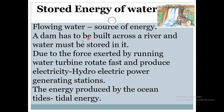Next is the stored energy of water. Flowing water can act as a source of energy. A dam is built across a river and water is stored in it. Due to the force exerted by running water, the turbine rotates fast and produces electricity. The electricity produced with the help of water is called hydroelectric power. The energy produced by ocean tides is called tidal energy.